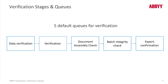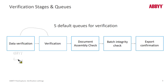Here are the five default queues for verification. We start with the Data Verification, then we have the Verification Queue, and those are the most commonly used verification stages. Often times there's a bifurcation of verification, where first data verification happens and someone knocks out and adjudicates all low confidence characters, and some of the rule violations as well.